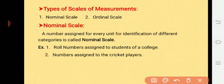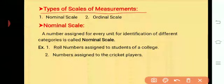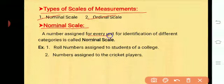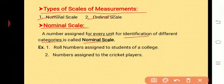The next concept is types of scales of measurements. There are two types of scales of measurements: nominal scale and ordinal scale. A number assigned for every unit for identification of different categories is called nominal scale.